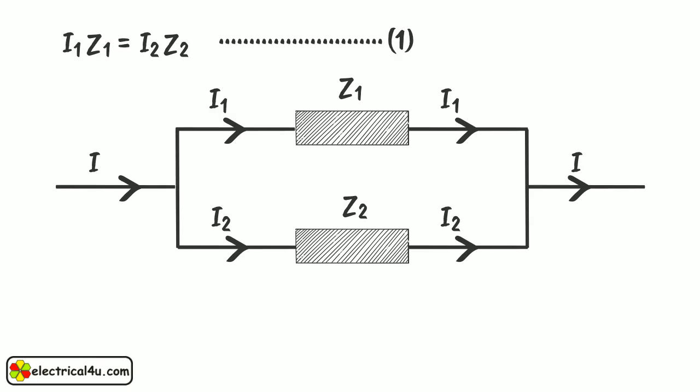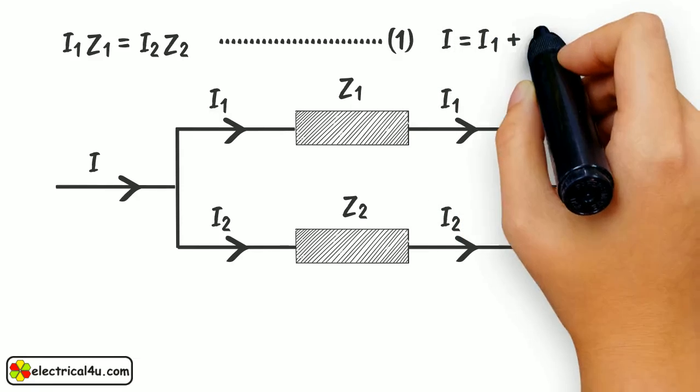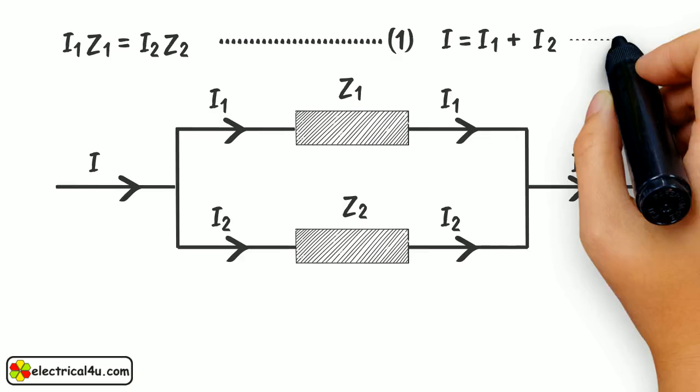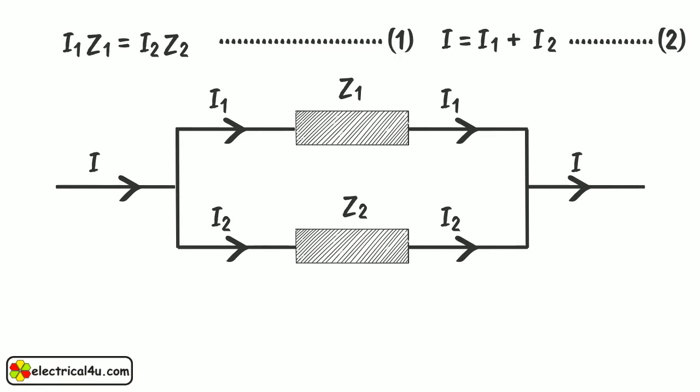As total current I is divided into I1 and I2, we can write I equals to I1 plus I2. Say, this equation is 2.